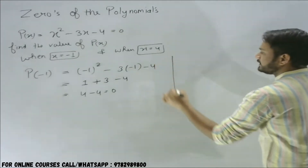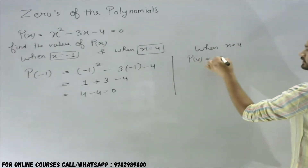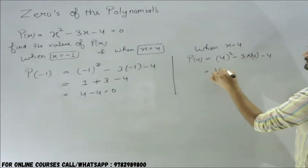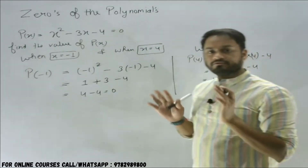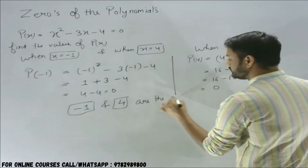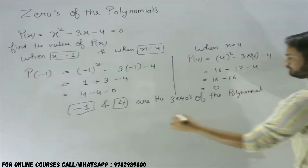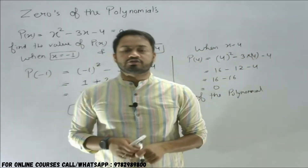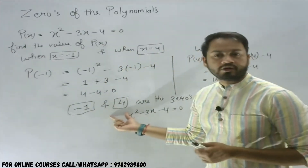Now we'll find p(4) when x equals 4. Substituting x as 4: 4 squared minus 3 into 4 minus 4. This will be 16 minus 12 minus 4, so 16 minus 16, which equals 0. Now we can say that minus 1 and 4 are the zeros of the polynomial x squared minus 3x minus 4. These are called the zeros of the polynomial — the values you put in that make the expression equal to 0.